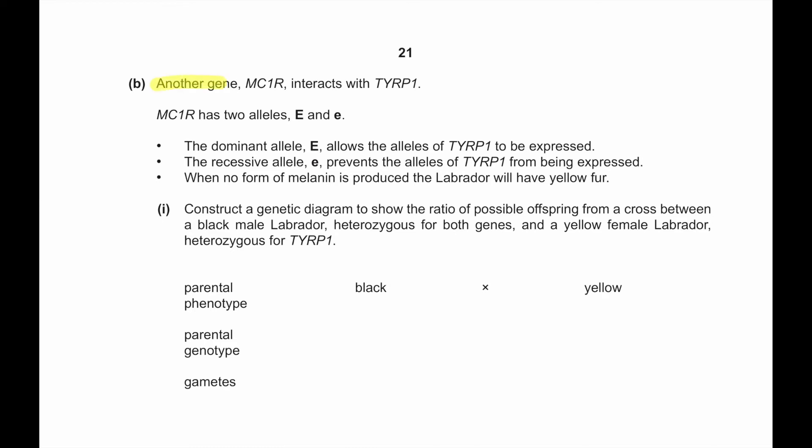Part B: Another gene MC1R interacts with TYRP1. MC1R has two alleles, capital E and small e. The dominant allele capital E allows the alleles for TYRP1 to be expressed. The recessive allele small e prevents the allele of TYRP1 from being expressed. When no form of melanin is produced, the Labradors will have yellow fur. Construct a genetic diagram to show the ratio of possible offspring from a cross between a black male Labrador heterozygous for both genes and a yellow female Labrador heterozygous for TYRP1.